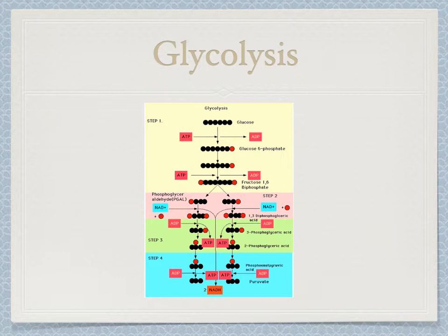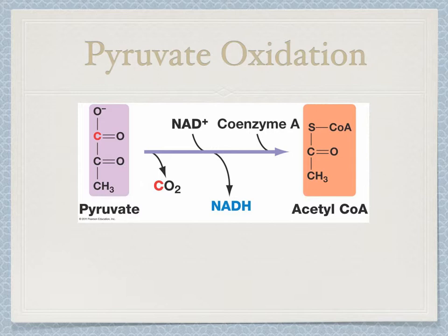Before the Krebs cycle can occur, pyruvate oxidation must take place. In this process, NAD+ is converted to NADH, making a two-carbon molecule. This last molecule is released as carbon dioxide. Acetyl-coenzyme A then attaches to the coenzyme molecule, creating acetyl-coenzyme A.